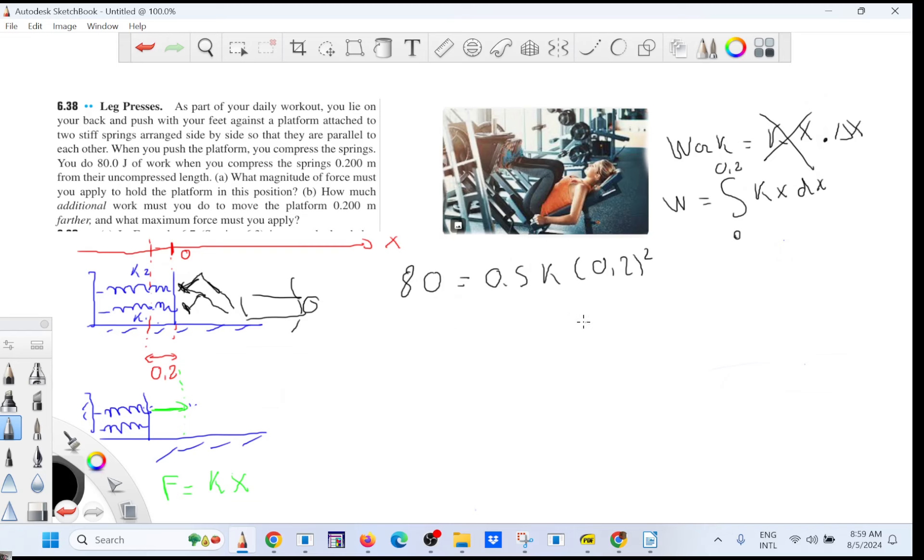Okay, so once you have solved this, you multiply by 2 here, and then you divide by 0.2 squared, and you find the spring constant of 4000 newton per meter. And that's going to be the equivalent spring constant for those two springs.